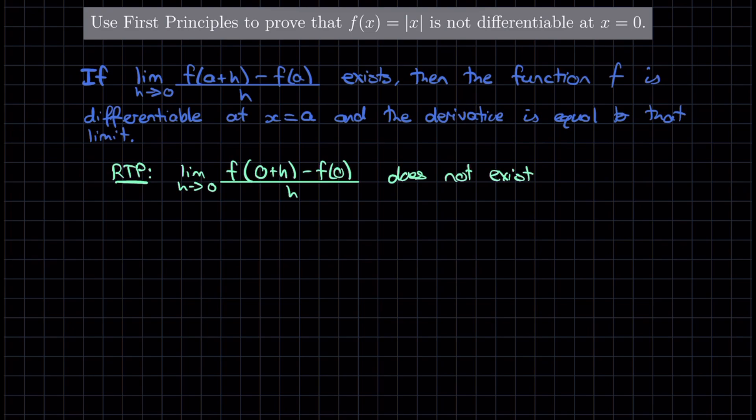Okay, so basically, I will start off by saying, we consider the limit as h approaches 0 of our function, which is the absolute value of x. So that's going to be the absolute value of 0 plus h minus the absolute value of 0, all over h.